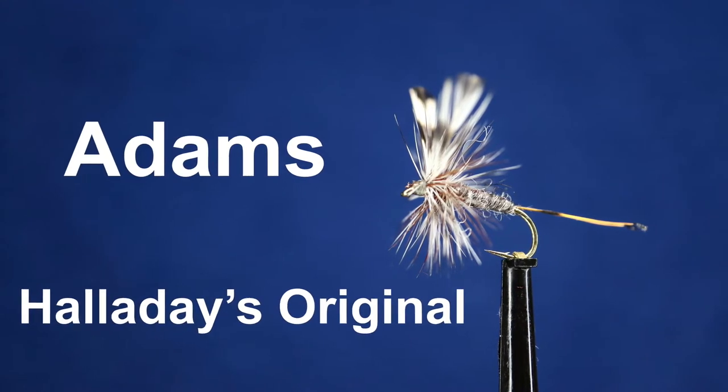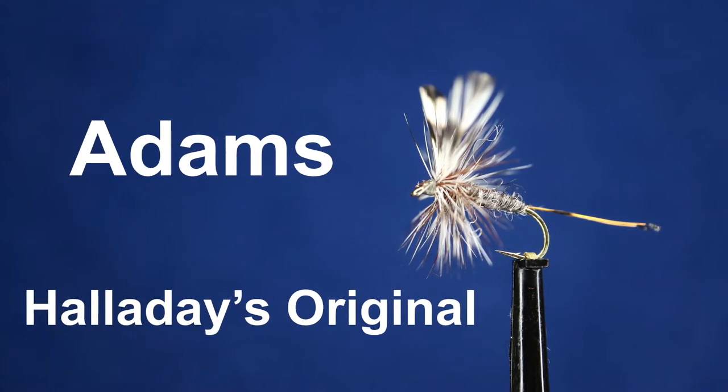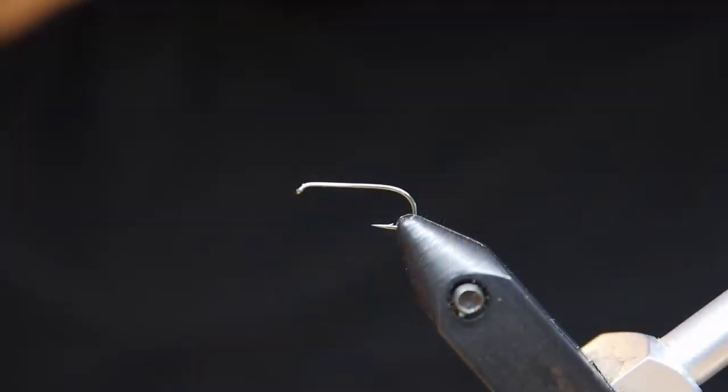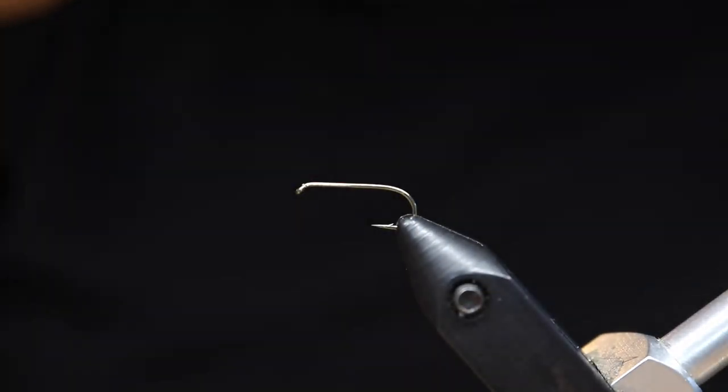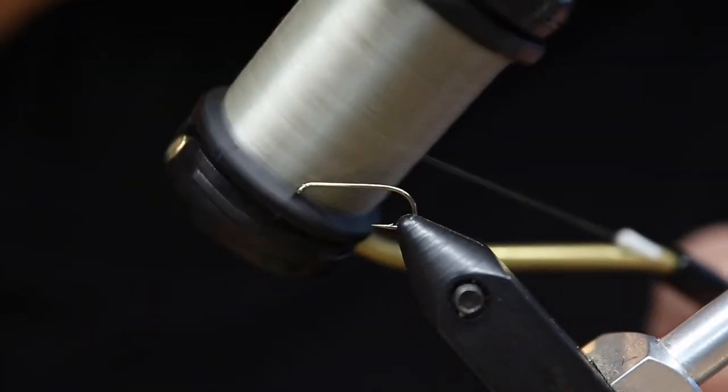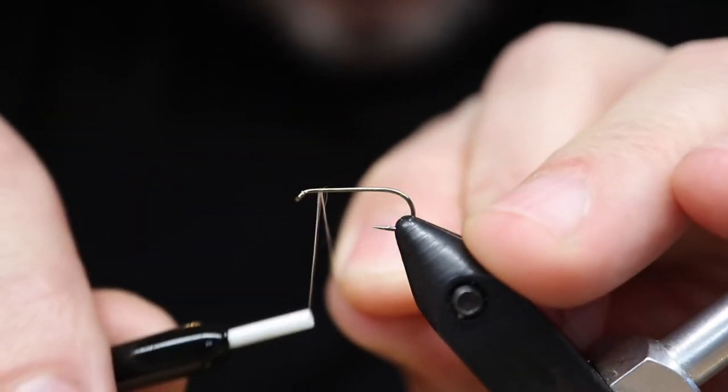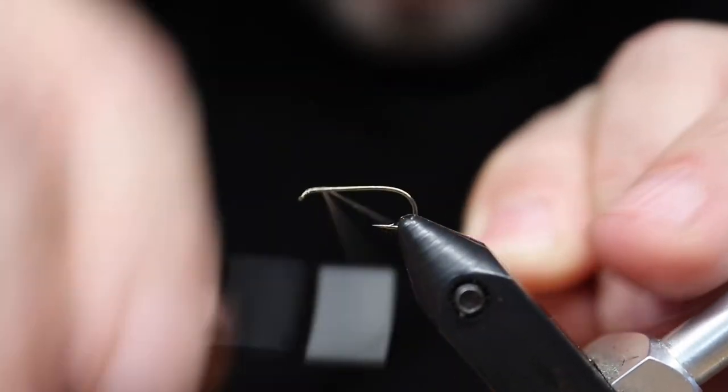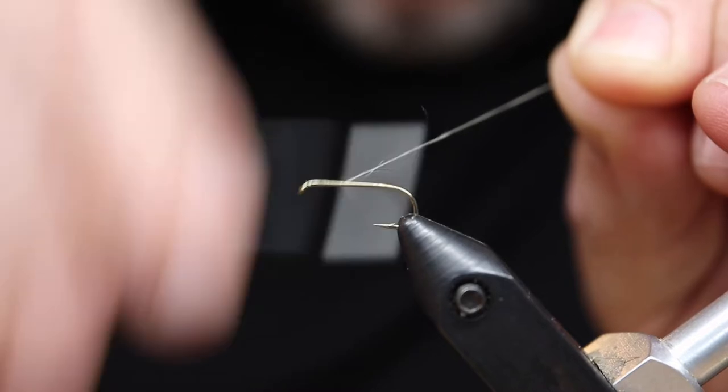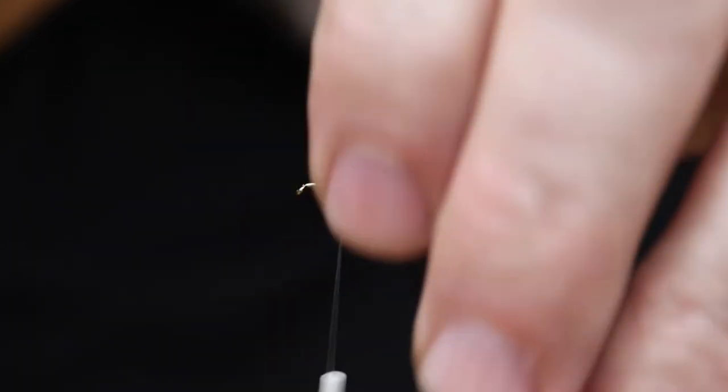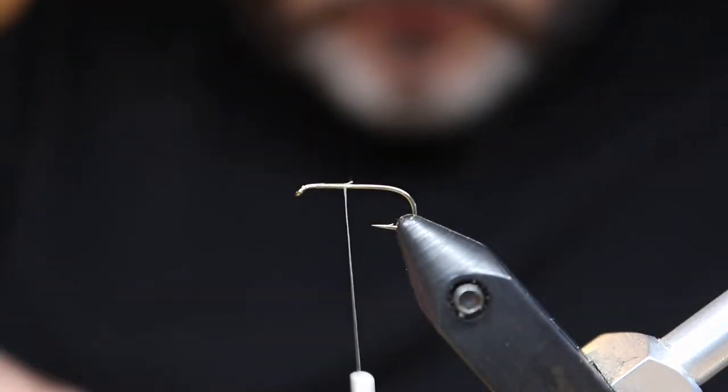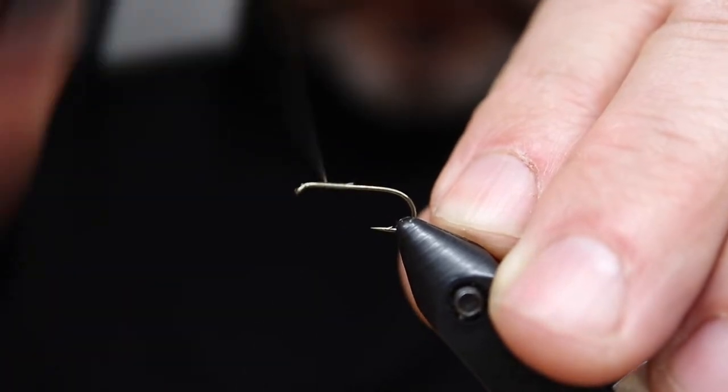Hello everybody, welcome back. We're going to tie the Adams Dry Fly and I've done some research to do it the original way that Leonard Halliday tied it using a TMC 100 size 14, just a tannish thread. Halliday used black sewing thread, cotton for almost everything.